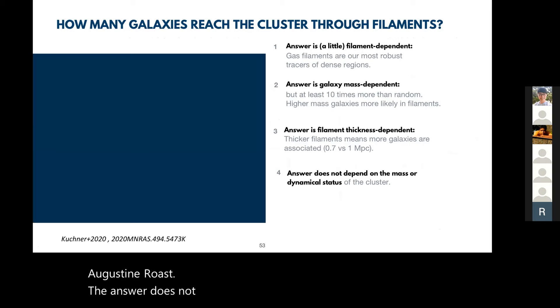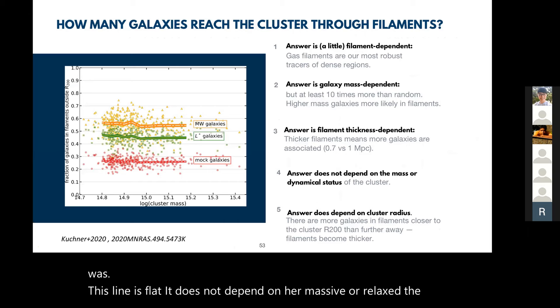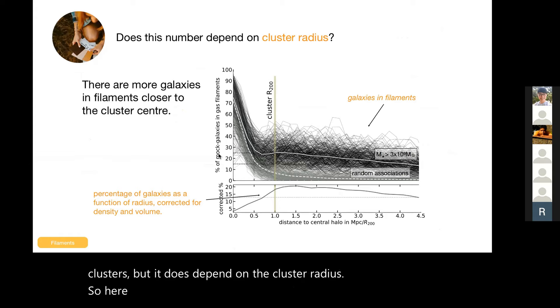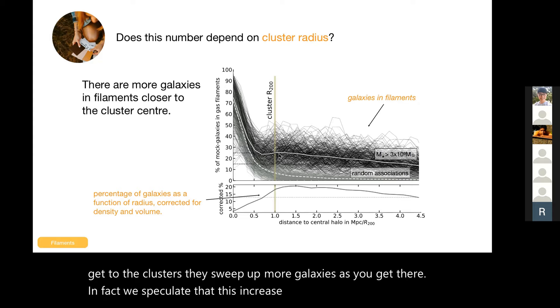The answer does not depend on mass or dynamic state. So it does not depend on how massive or relaxed the cluster is, but it does depend on the cluster radius. Here we have the cluster in the center, and this is the distance to the central halo, the distance to the cluster. The percentage of galaxies in gas filaments slowly increases as you go closer. In fact, filaments actually become thicker as you get to the clusters. They sweep up more galaxies as you get there. In fact, we speculate that this increase of this bunching up of galaxies closer to the filaments could be because we have a large fraction of backsplash galaxies.